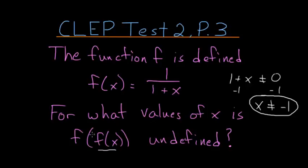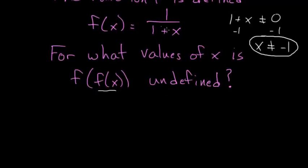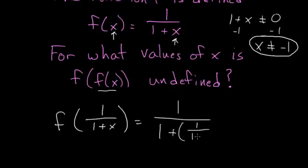The question asks what values of x make f of f of x undefined, so we need to look at this composite function. Let's put 1 over 1 plus x back into the function anywhere we see an x. So f of f of x equals 1 divided by 1 plus 1 over 1 plus x.